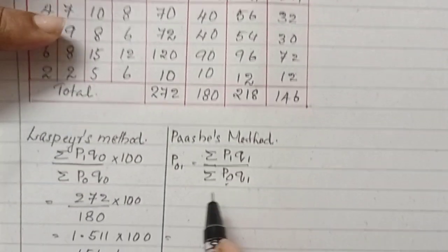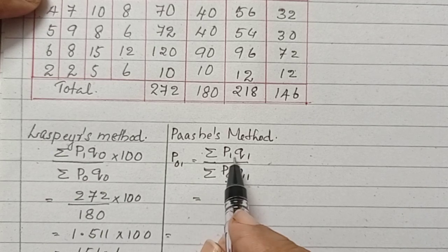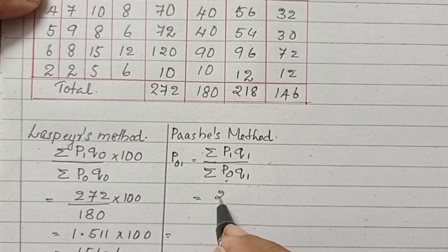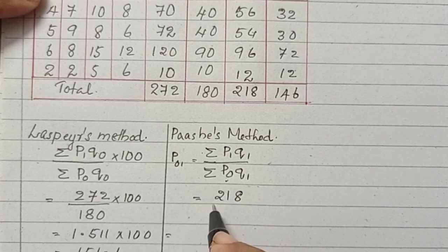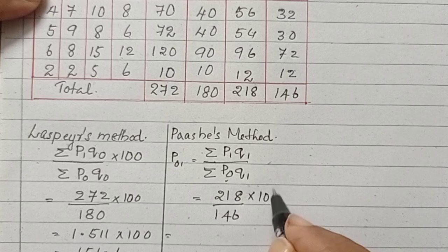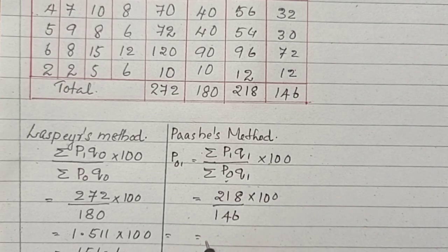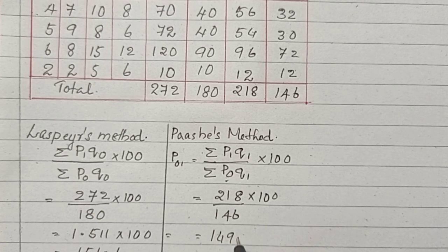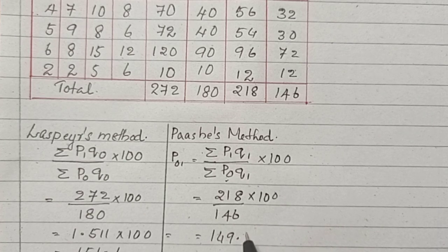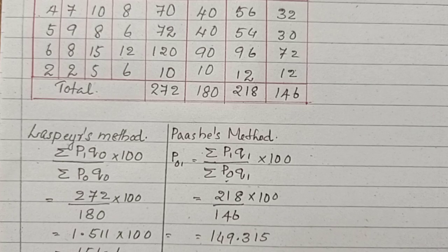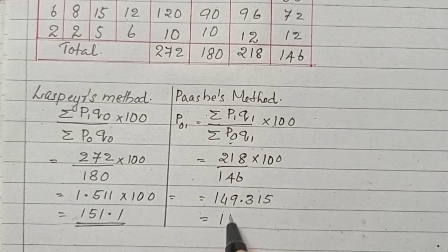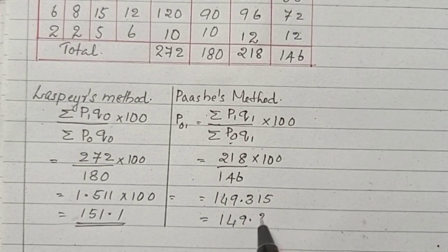Using Paasche's method, its answer will be sigma P1 Q1, that means 218 divided by 146 into 100, equal to 149.315. When we are rounding it, we will get 149.32.